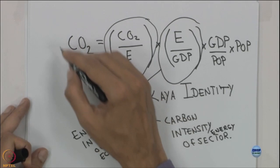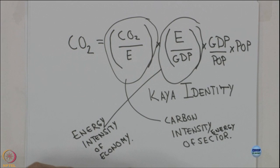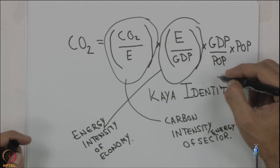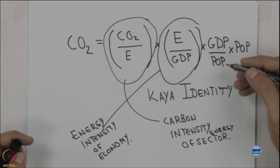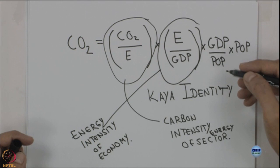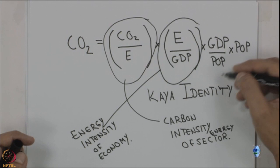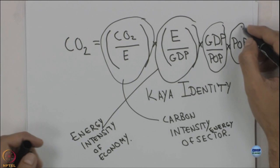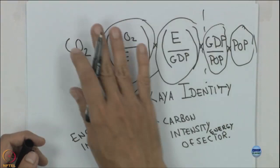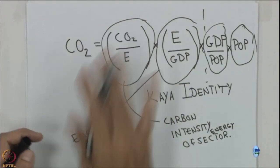When we want to stabilize CO2 emissions, we have limited options regarding population stabilization. GDP per population is a measure of affluence — quality of life typically increases with GDP, so we do not want to reduce it. These two factors are largely outside our control. Therefore, we focus on reducing the energy intensity of the economy or reducing the carbon intensity of the energy sector.